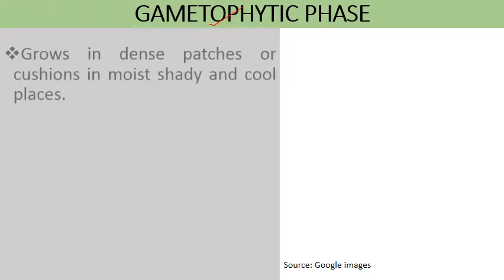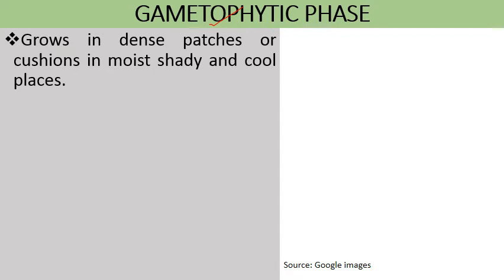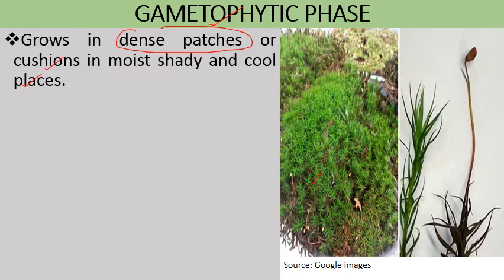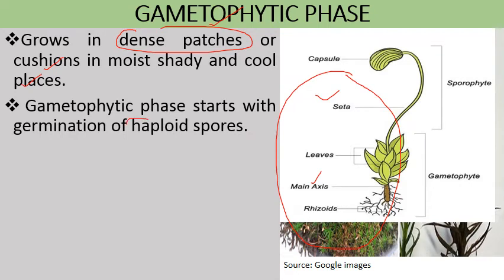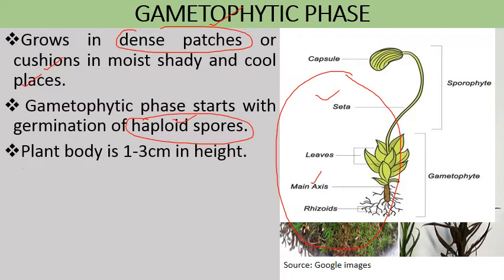The gametophytic phase is the main plant body and it starts with the germination of a meiospore or spore. The gametophytic plant body grows in dense patches or cushions in moist, shady, and cool places. This genus grows as cushions or patches in a moist shady area. The gametophytic phase starts with the germination of haploid spores. The plant body is 1 to 3 cm in height.